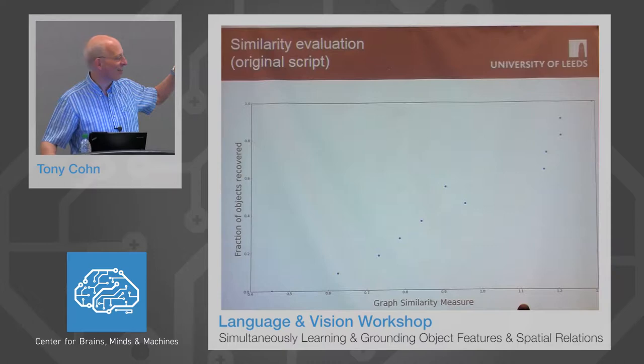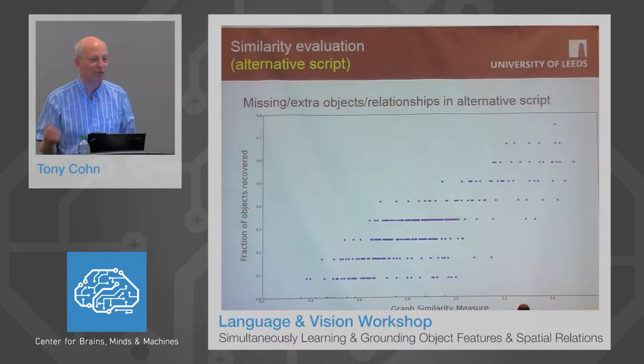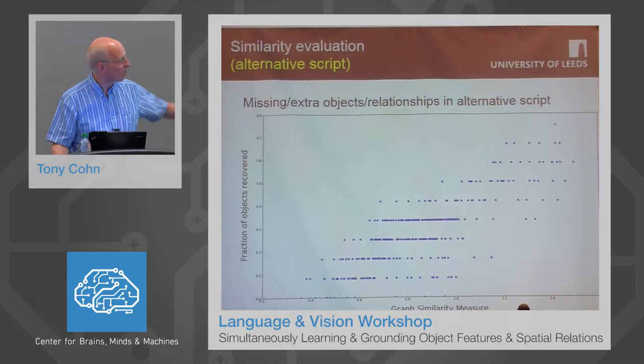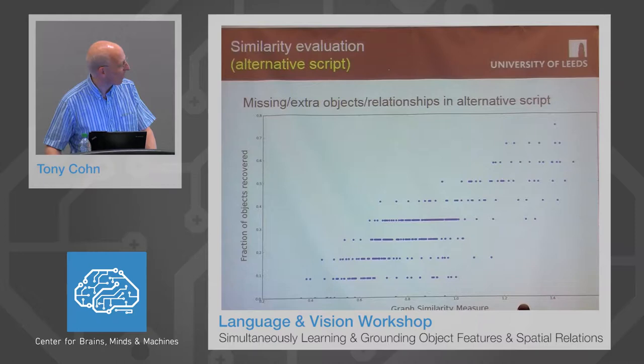This tells us that the better the graph similarities — shown on the x-axis — the higher the fraction of objects recovered on the y-axis. Because the picture we saw was from the WikiHow page, this is a correct natural language description of the image. But even if we take a different natural language description — one that may have additional objects, missing objects, or different relationships — we're still able to recover a good fraction of the objects and essentially ground the language to the perceptual objects.